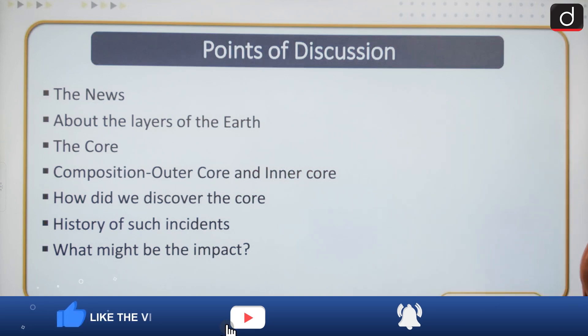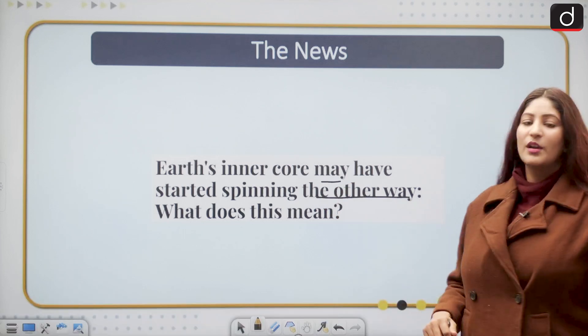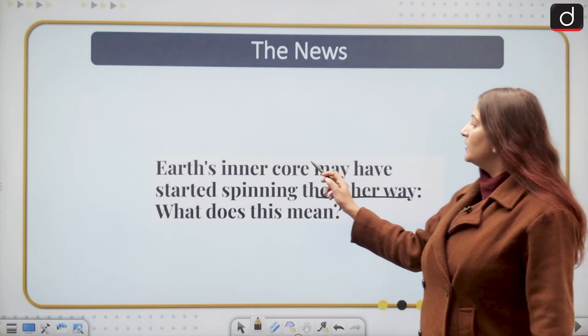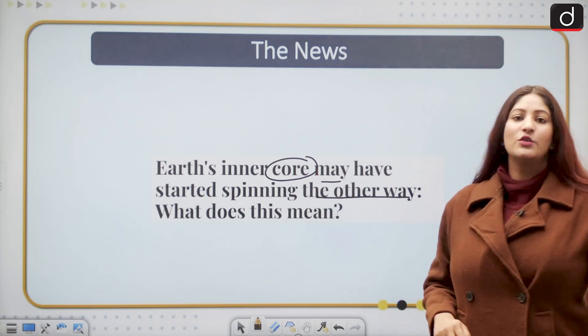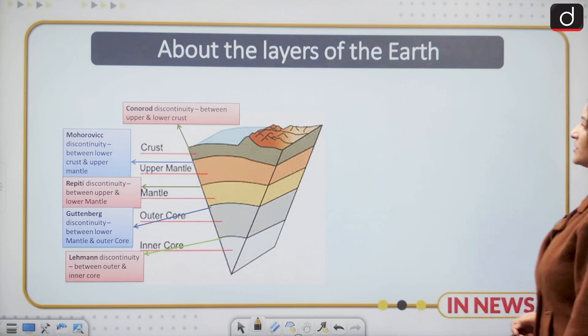Now the news says earth's inner core may have started spinning the other way. What does this mean? As we know the core is divided into two parts, the outer core and the inner core. So we are specifically going to talk about inner core.